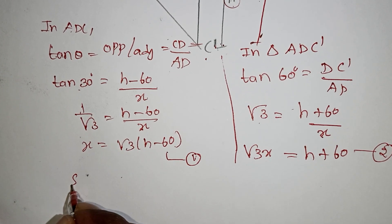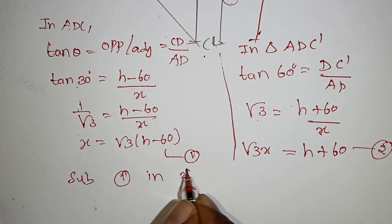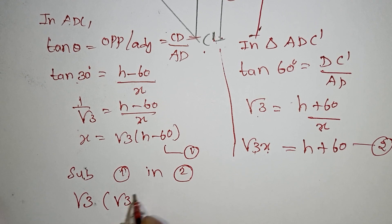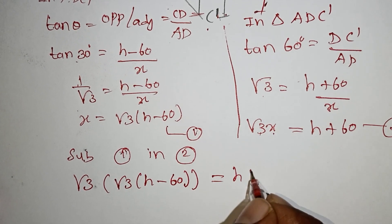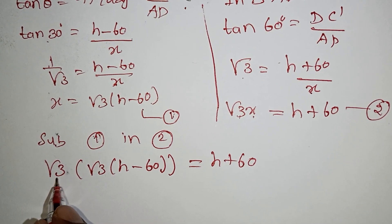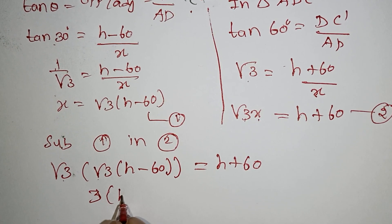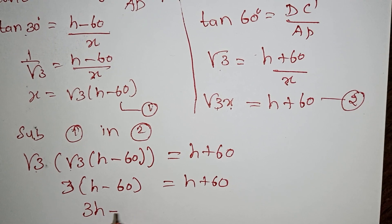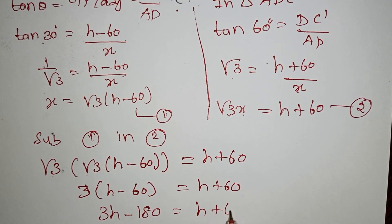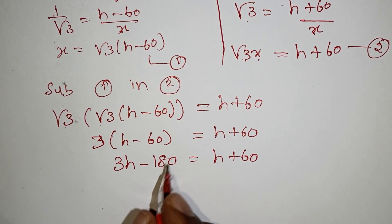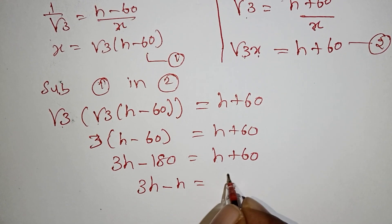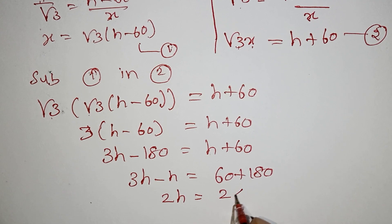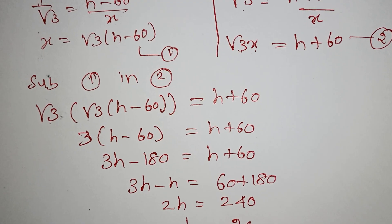Substituting Equation 1 into Equation 2: substitute x = √3(h − 60) into √3·x = h + 60. We get √3 × √3(h − 60) = h + 60, so 3(h − 60) = h + 60, which gives 3h − 180 = h + 60. Therefore 3h − h = 60 + 180, so 2h = 240.